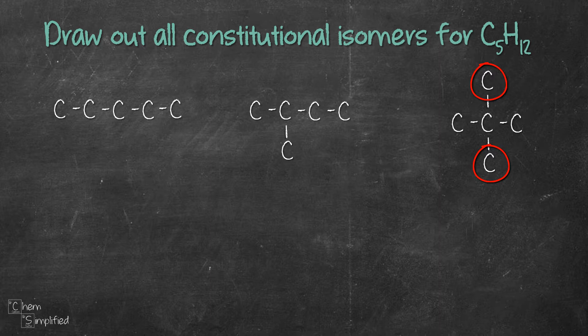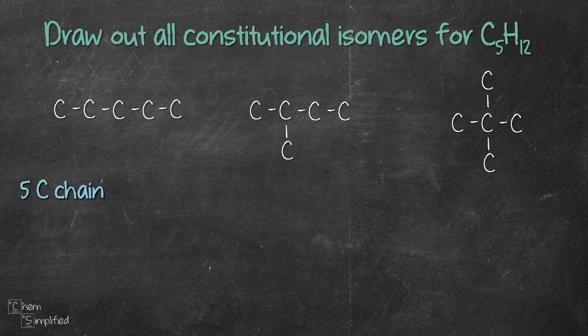Let's place in the hydrogens. With the 5 carbons, the first carbon is connected to only 1 carbon. Since carbon can make 4 bonds, that means the first carbon will be attached to 3 hydrogens.